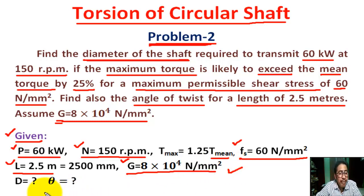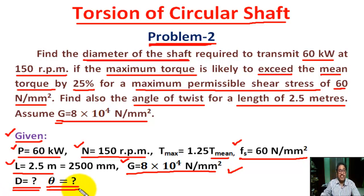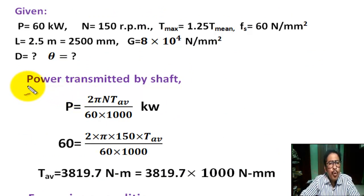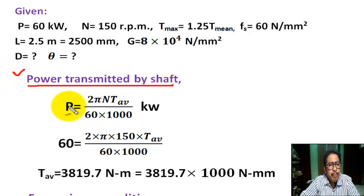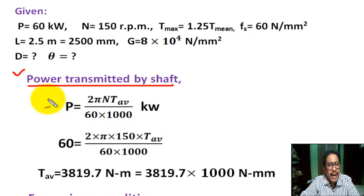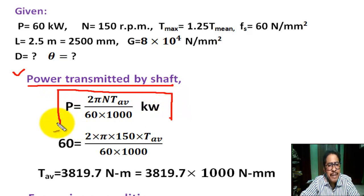This is the given data. We find the diameter of the solid shaft in millimeter and also find the angle of twist in degrees. We know the power transmitted by shaft formula: P equals 2πN times T_average, divided by 60 into 1000, in kilowatt. This is the formula for power transmitted by the shaft.